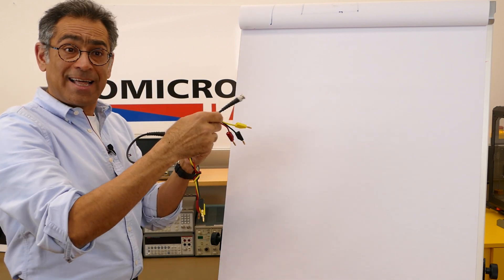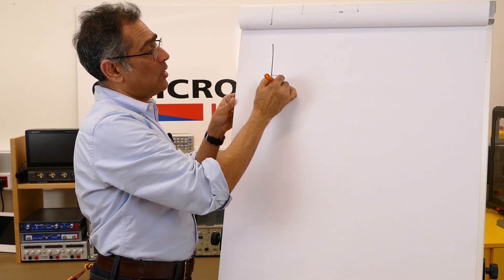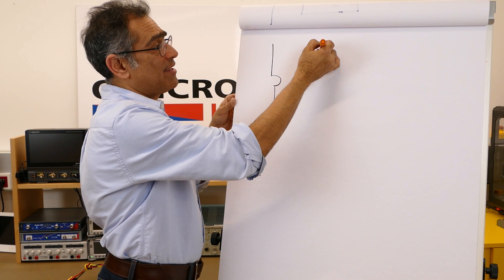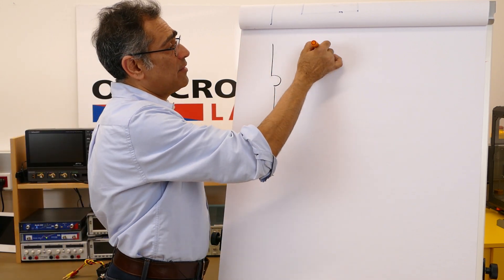In effect that's going to look something like this. You have got one single turn of primary and that is the cable of the device under test.